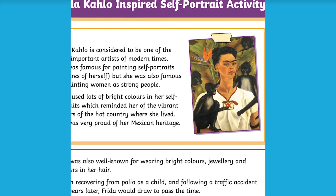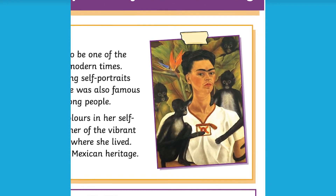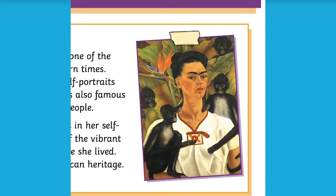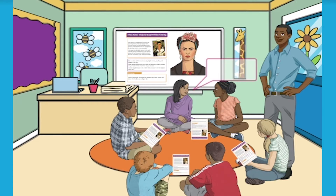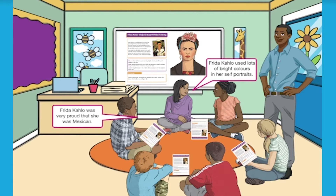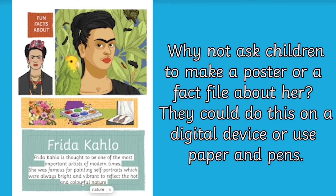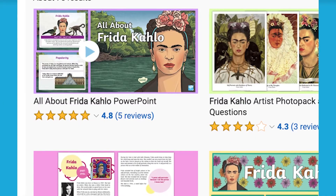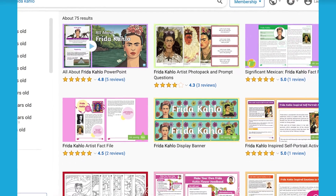To begin, use the activity to inform the children's knowledge of Frida Kahlo as an artist by using the information provided. You could use this information in a number of different ways. For example, you could try asking children to read the information and then find five interesting facts about her to feed back to the group, and then this could lead on to a class discussion. Or, if you wanted to spend longer learning about Frida Kahlo, this activity sheet could help inform children when making their own fact file or poster about her. We also have loads of other useful resources about her and her artwork on the Twinkle website that you and your children could use too.